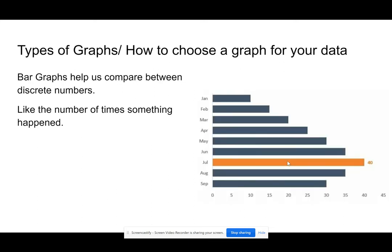Then we have bar graphs. Bar graphs allow us to compare discrete numbers. A discrete number is self-contained — it doesn't really reference anything else. So in this graph, we have months of the year and the number of times something happened in that month, so we can compare those discrete numbers.